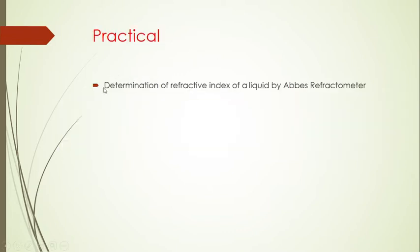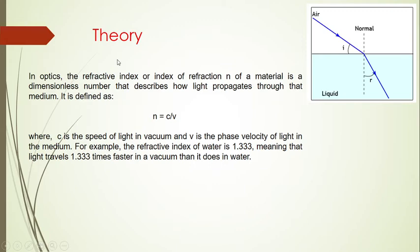Now for our practical: determination of refractive index of a liquid by Abbe's refractometer. The refractive index is the ratio of the speed of light in vacuum (c) to the speed of light in the material (v). It is a dimensionless quantity. For example, the refractive index of water is 1.33, meaning light travels 1.33 times faster in vacuum than in water.